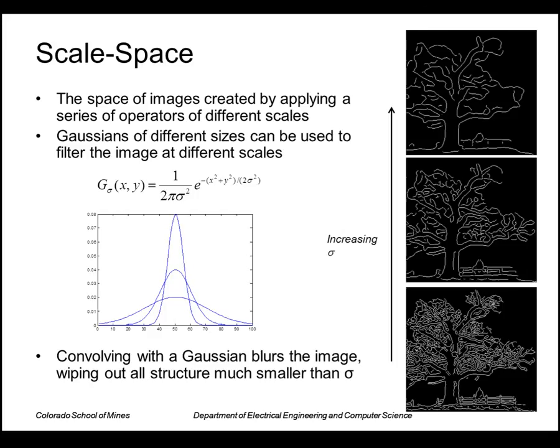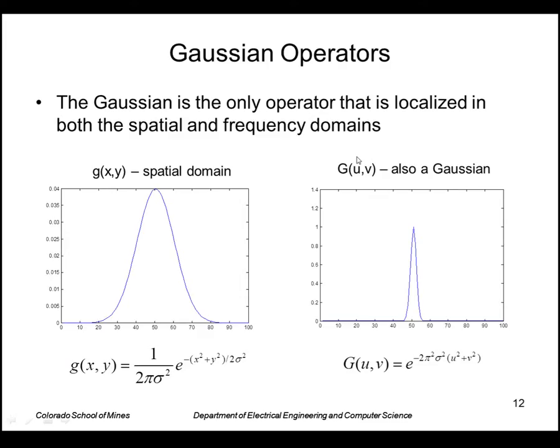The Gaussian operator is useful because it's localized in both the spatial and frequency domains, meaning that it goes to zero beyond, essentially goes to zero beyond a certain point in both spatial and frequency, since these are Fourier pairs.